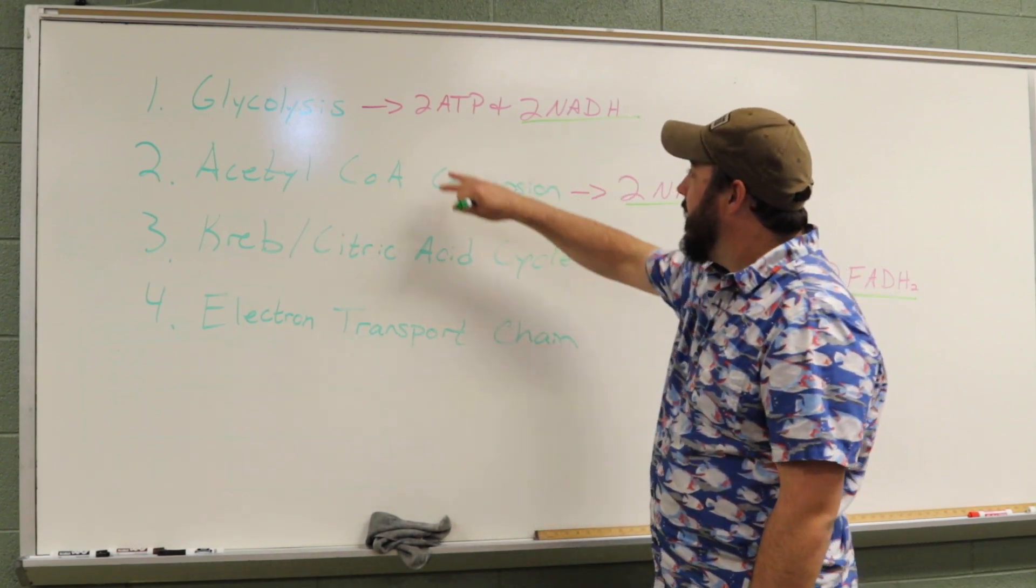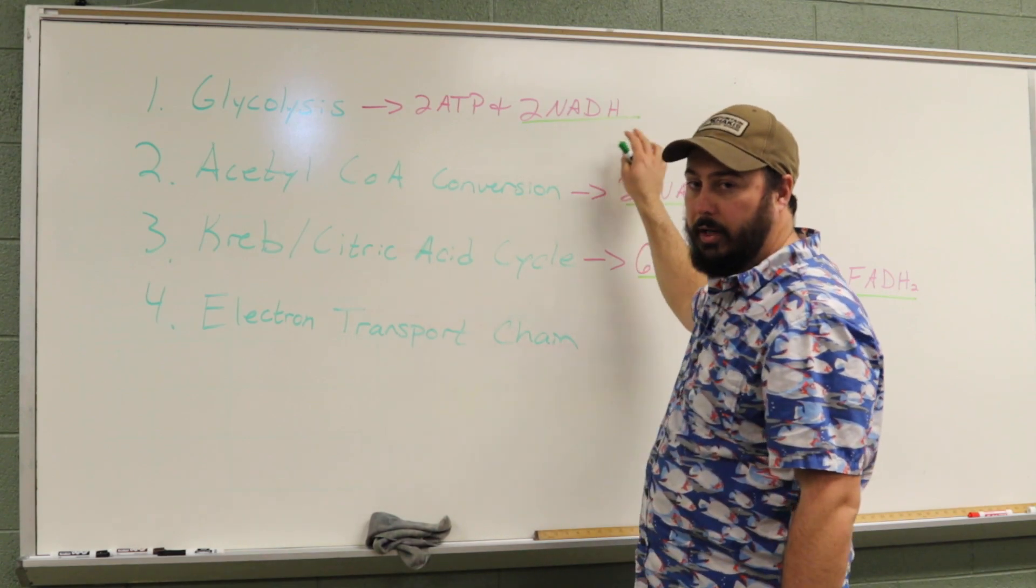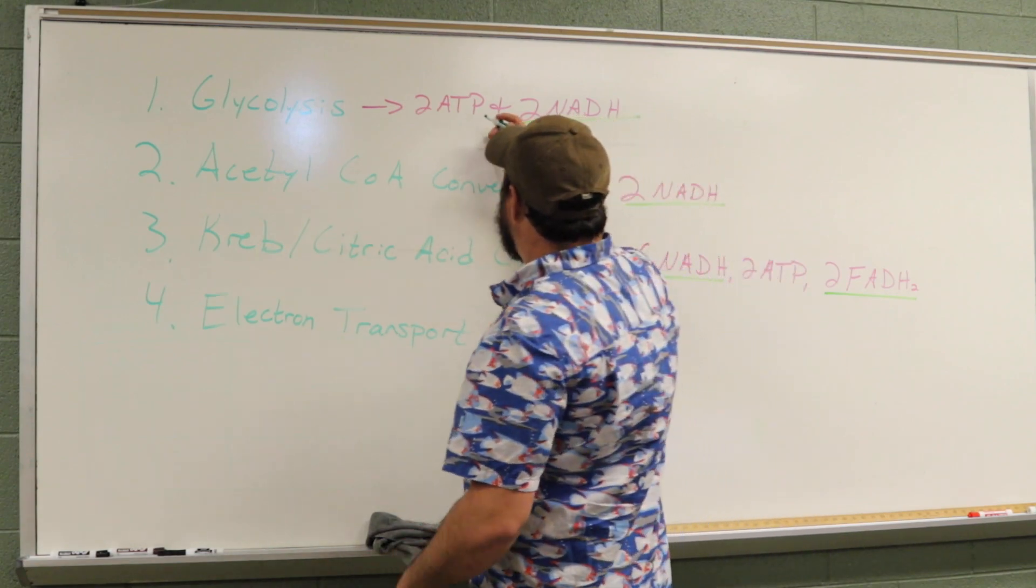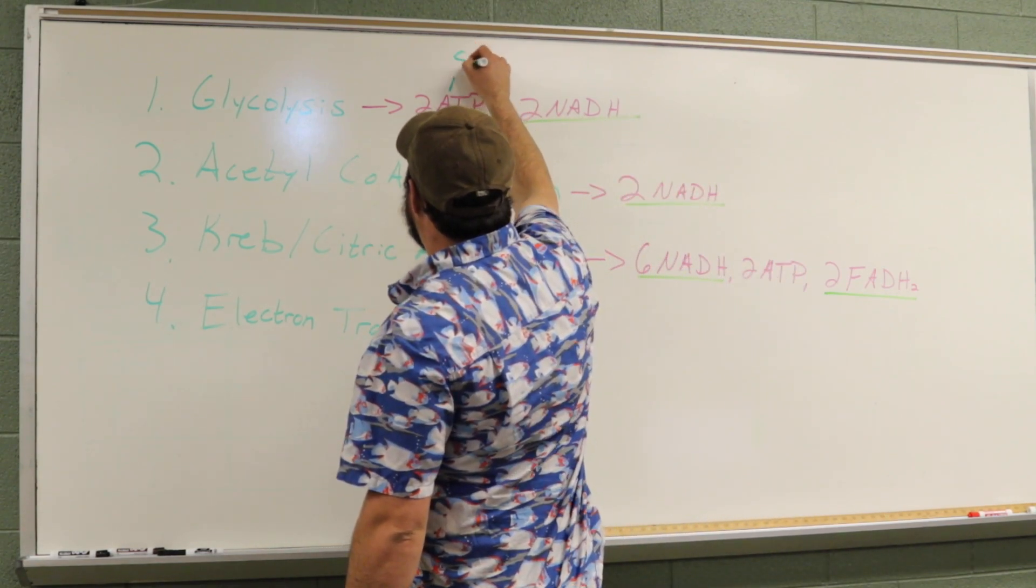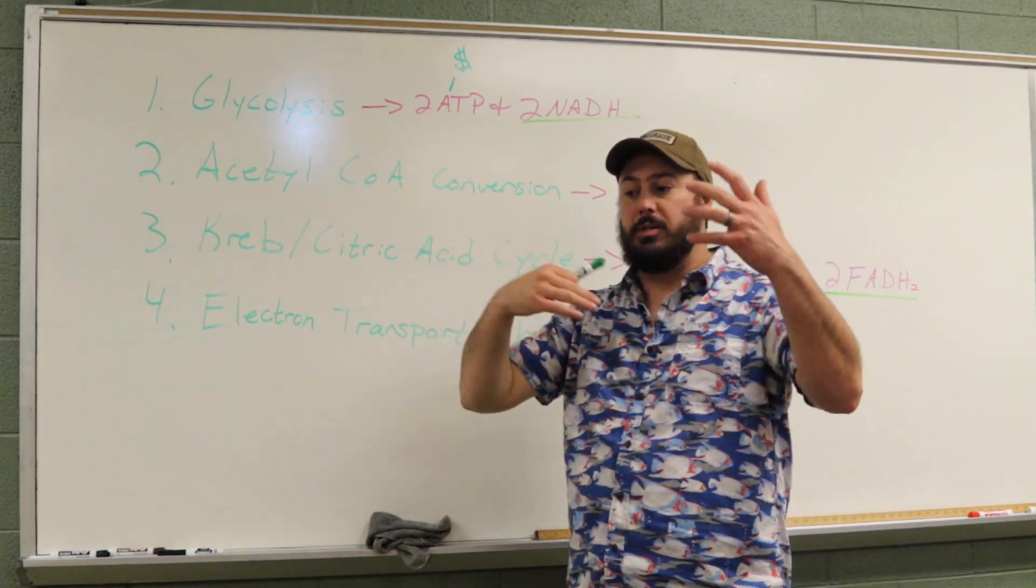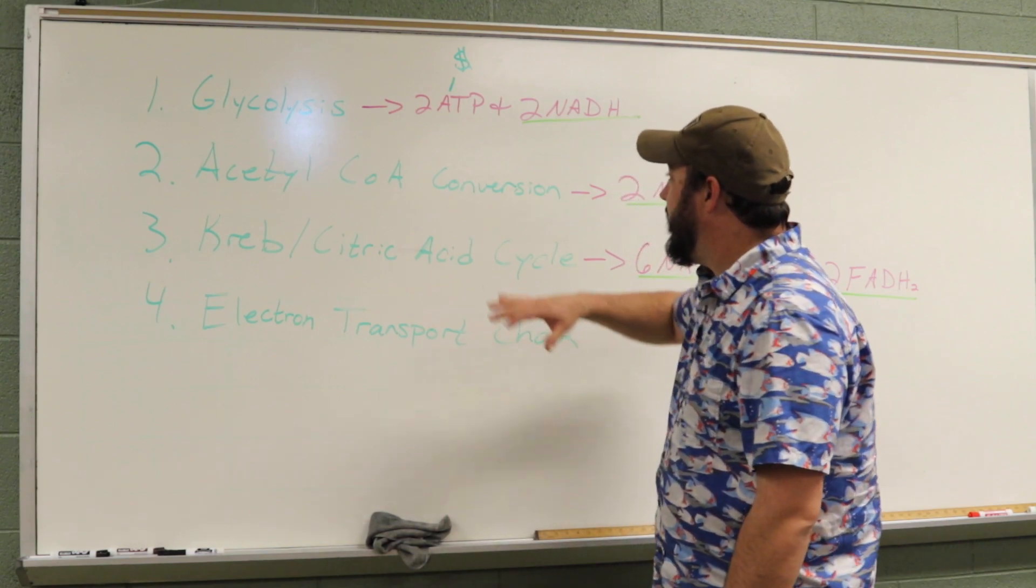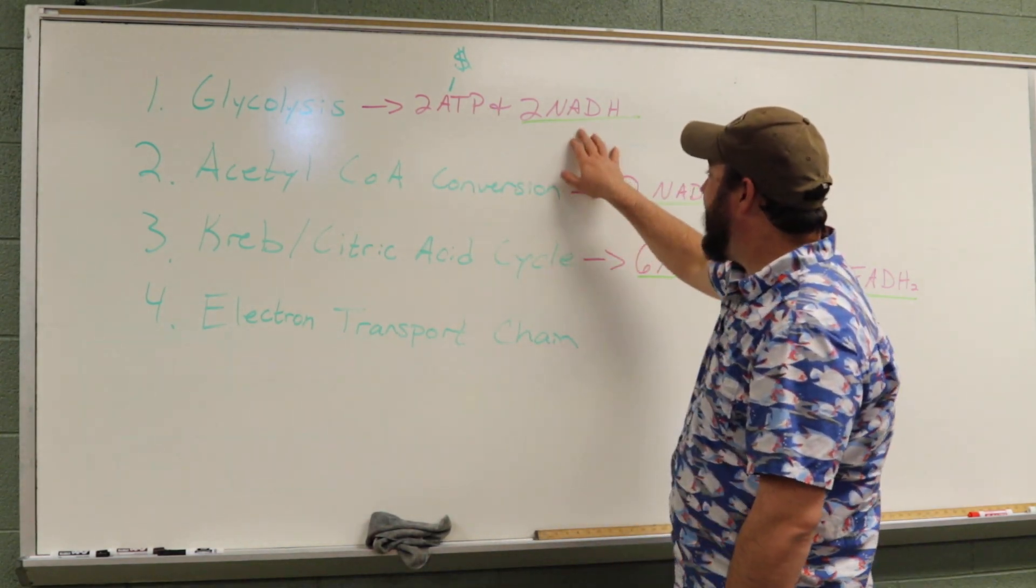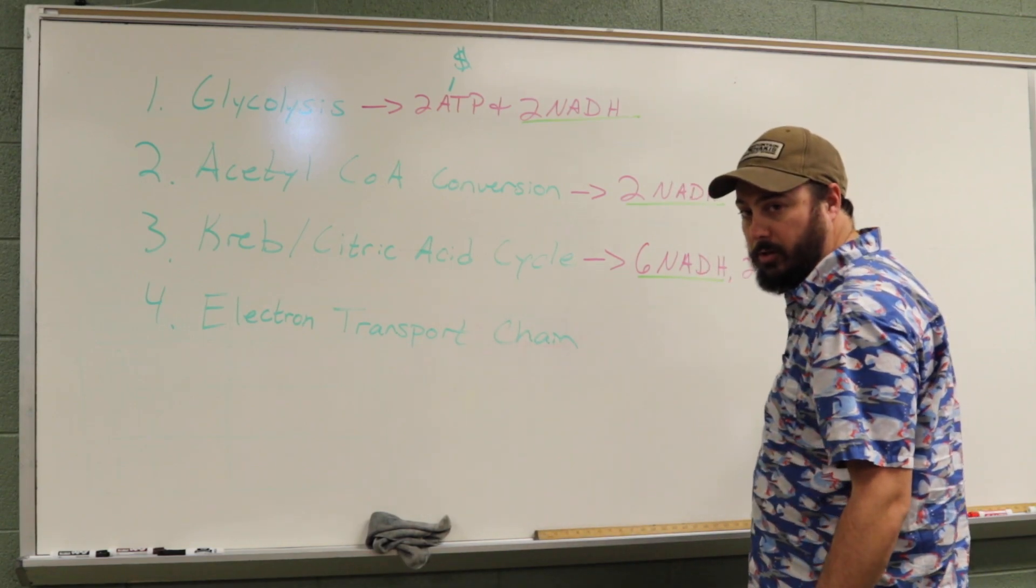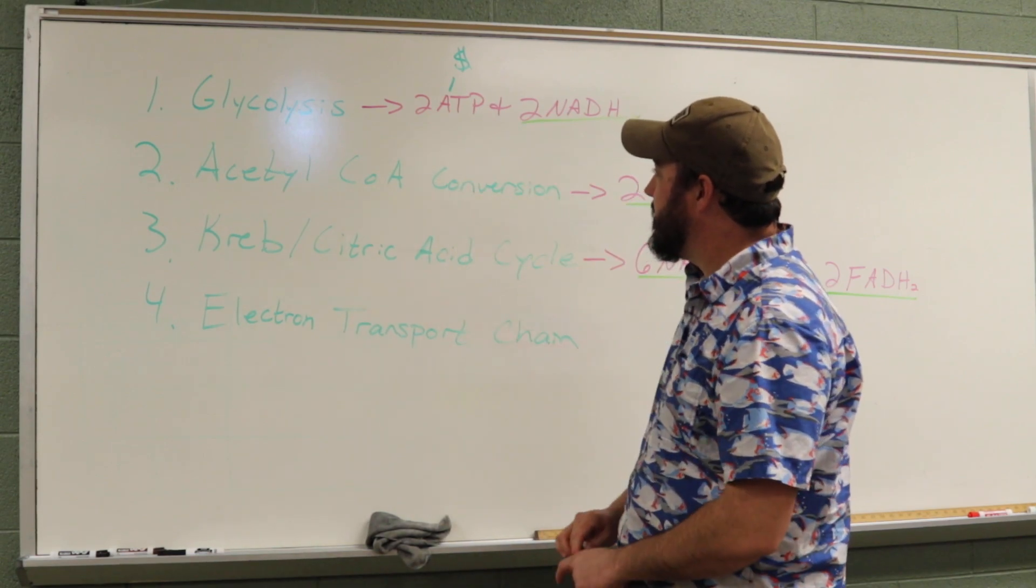Glycolysis results in two ATP and two NADH. Now, we're going to get into what these are in just a moment, but right now the best idea is to think of ATP as cellular currency. So it's the money that cells use to buy and purchase things. If ATP is the money, then NADH is sort of like a debit card, and FADH2, sort of like a credit card.